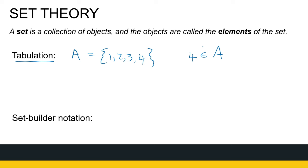I tabulated everything — I listed everything in the set. Then I can say, well, I can see that 4 is an element of the set. So this is the symbol we use for element. 1 is an element of the set. 5 is not an element of the set. So that is some notation.